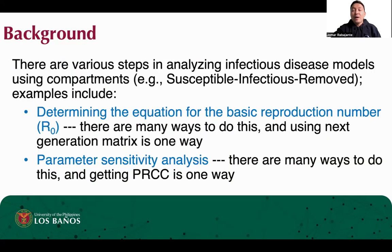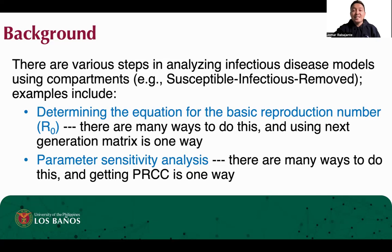To provide a brief background, there are various steps in analyzing infectious disease models, such as investigating the boundedness and non-negativity of solutions, the stability of equilibria, determining the basic reproduction number, parameter fitting, sensitivity analysis such as using partial rank correlation coefficient, and many more. Here, we combine two of the steps: determining the equation for the reproduction number and parameter sensitivity analysis.